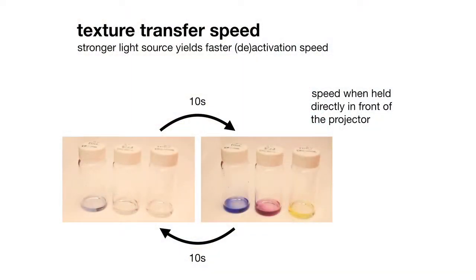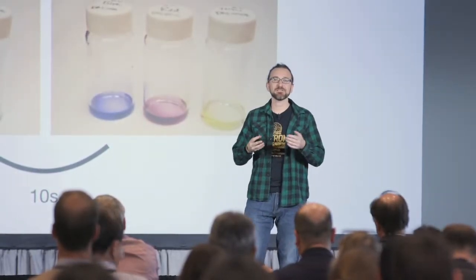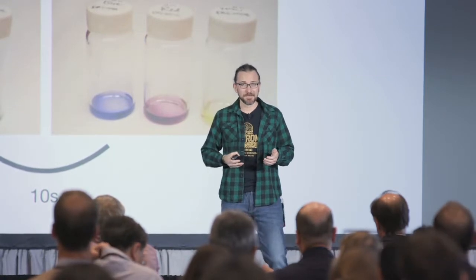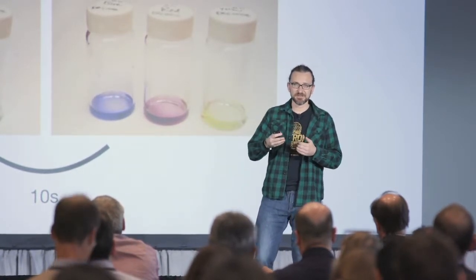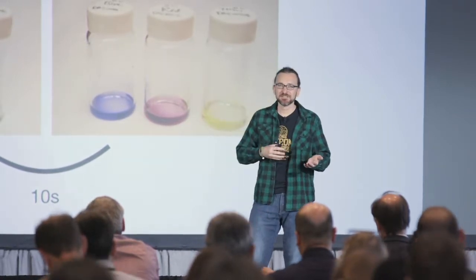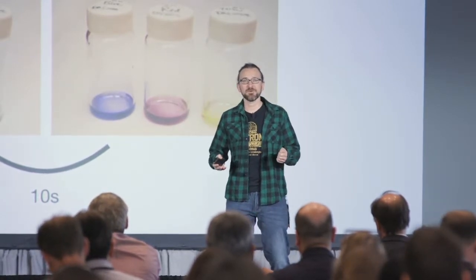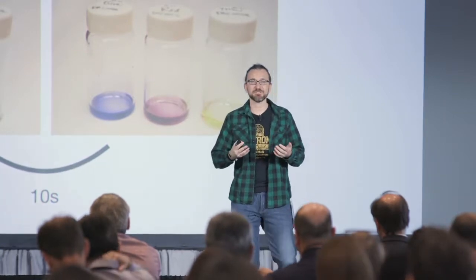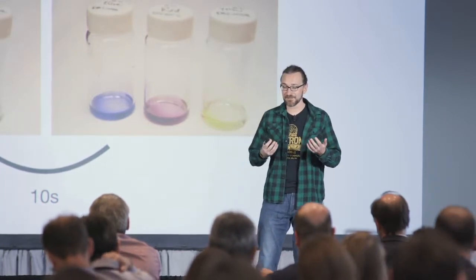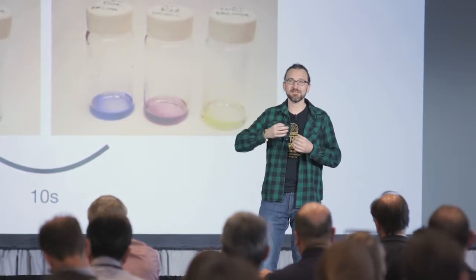Transferring a texture to an object is a process that takes up to 30 to 40 minutes, depending on what colors you want to create and the size of the object. The speed is highly dependent on the intensity of the light source. We wanted to make it accessible using a projector and UV light you can just buy for about $500. But with more expensive hardware that can produce higher brightness, you can accelerate this process a lot — down to five minutes, one minute, or maybe even an instant transfer.